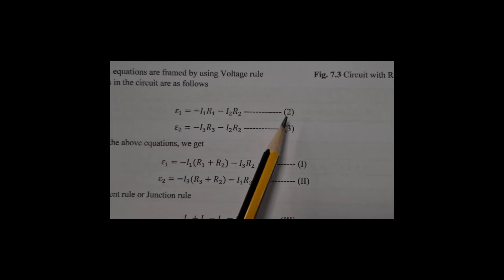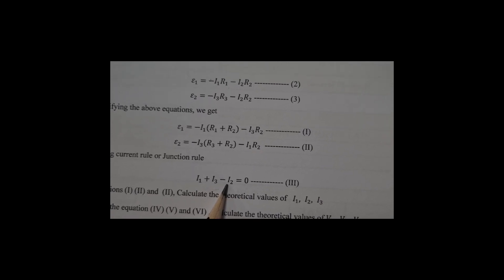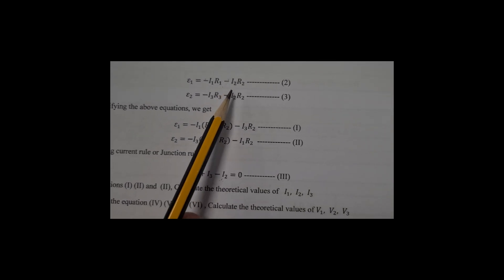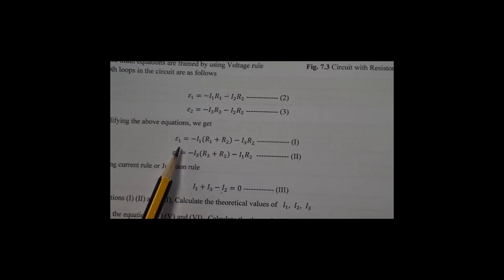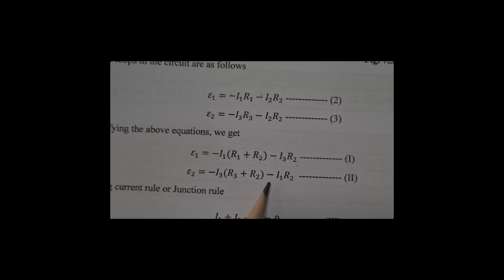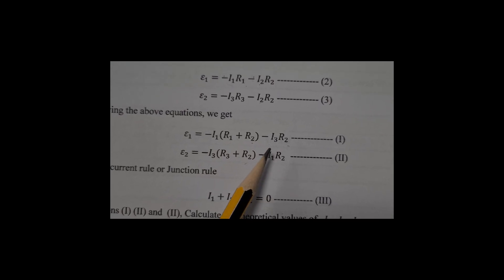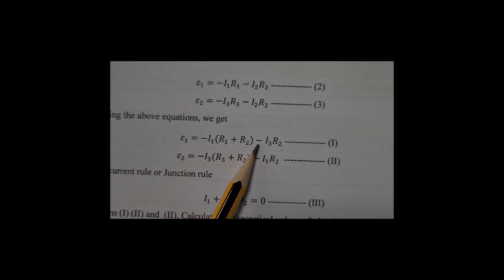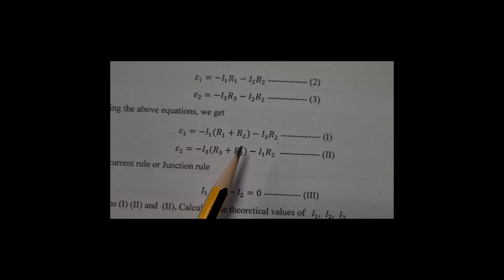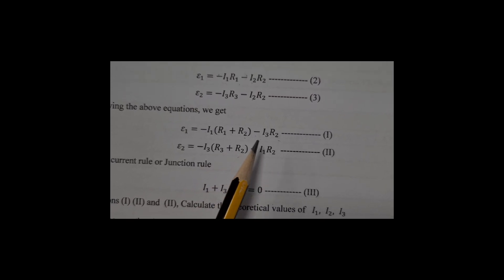Using equations 1 and 2, we substitute the value of I2 from the junction rule into both formulas. The equations reduce to: Epsilon 1 equals minus I1(R1 + R2) minus I3·R2, and Epsilon 2 equals minus I3(R3 + R2) minus I1·R2. Both equations are now in terms of I1 and I3 only.